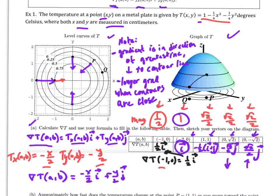A couple of observations: the gradient is in the direction of the greatest increase. From point p, moving in the gradient direction means going up. The gradient is also perpendicular to the contour line — at p, a line perpendicular to the tangent of the contour gives the gradient direction. When contour lines are close together the gradient is longer; when they're spread apart it's shorter. The gradient points in the direction of greatest change from a designated point.